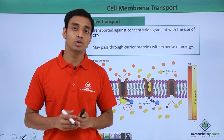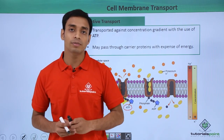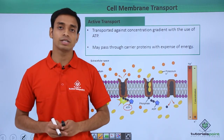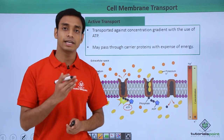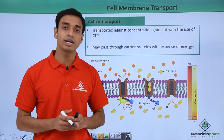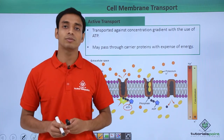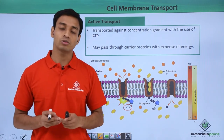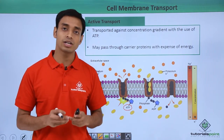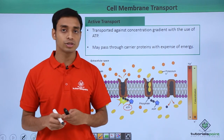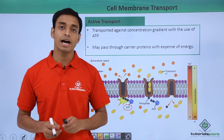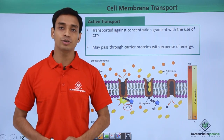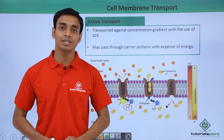In this video we have talked about the transportation process happening across the eukaryotic cell membrane, covering three different types of transport: passive transport, osmosis, and active transport. I hope you have understood. Thank you.